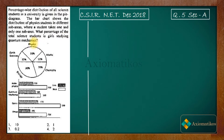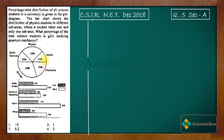In the problem, you have this pie chart representing the total science students. This pie chart represents total science students, out of which 20% belongs to physics. So 20% of students have taken physics, and in this physics section you have these sub-areas: astrophysics, quantum mechanics, optics, and others. This sector of the circle represents total physics students.